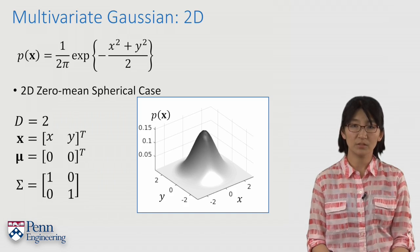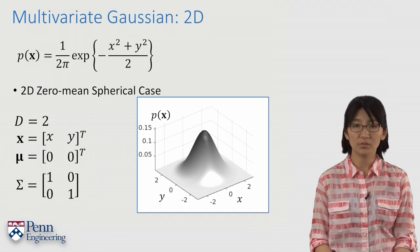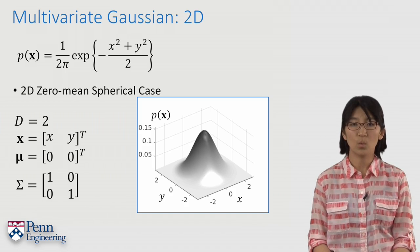If you cut the surface at the peak in half, then the cross-section would be exactly 1D Gaussian shape.